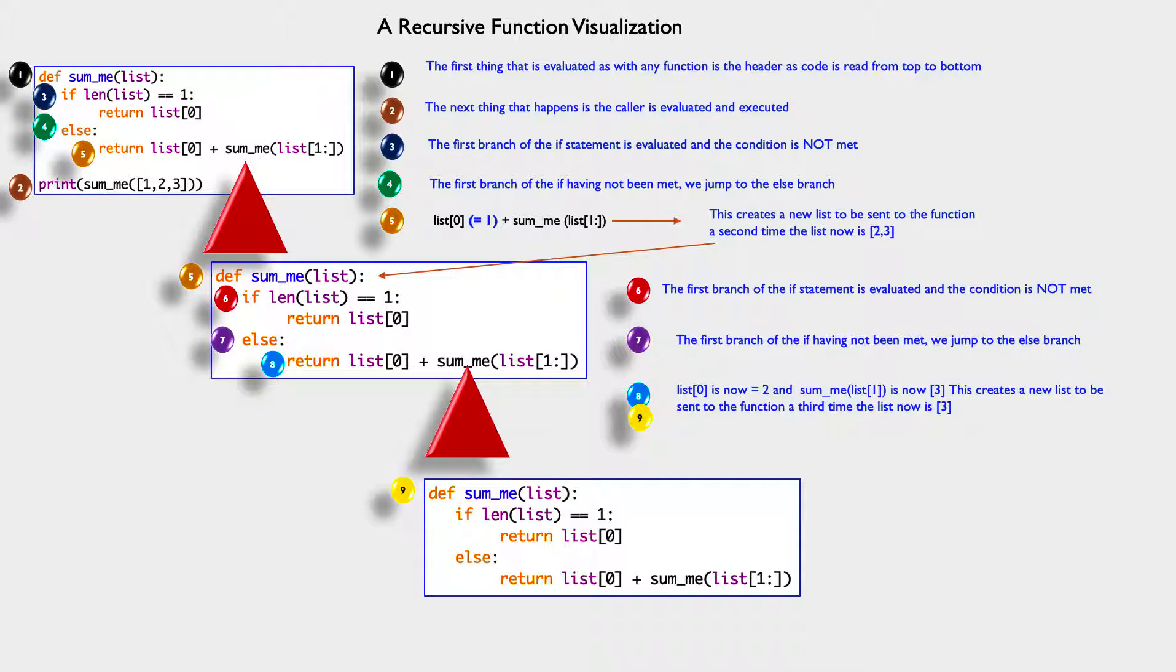We're being instructed to go through the function a third time. Now 1: colon equals three. It's the only thing left in the list. The second element on is now three. So this starts our cycle for the third time.